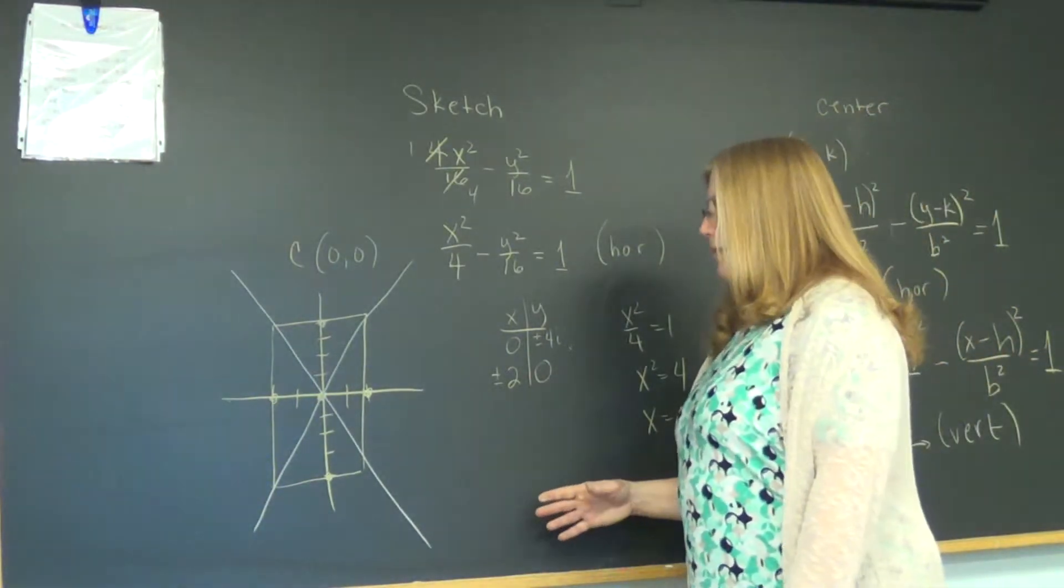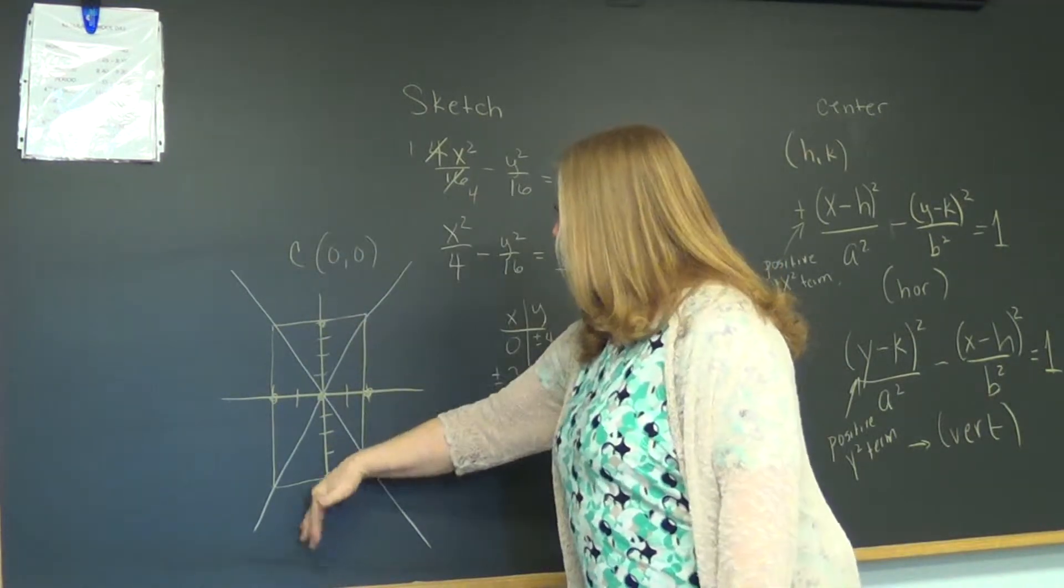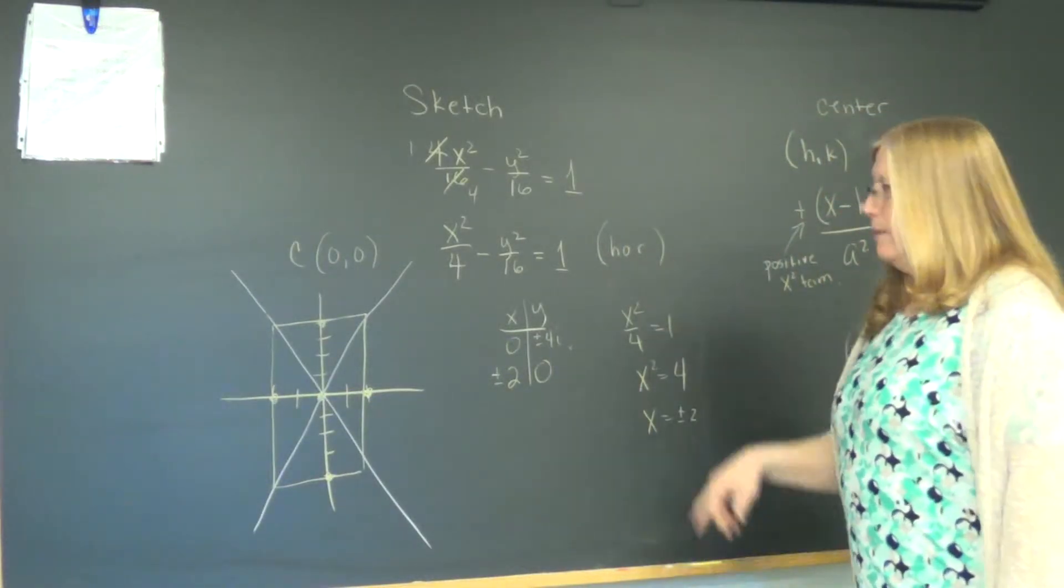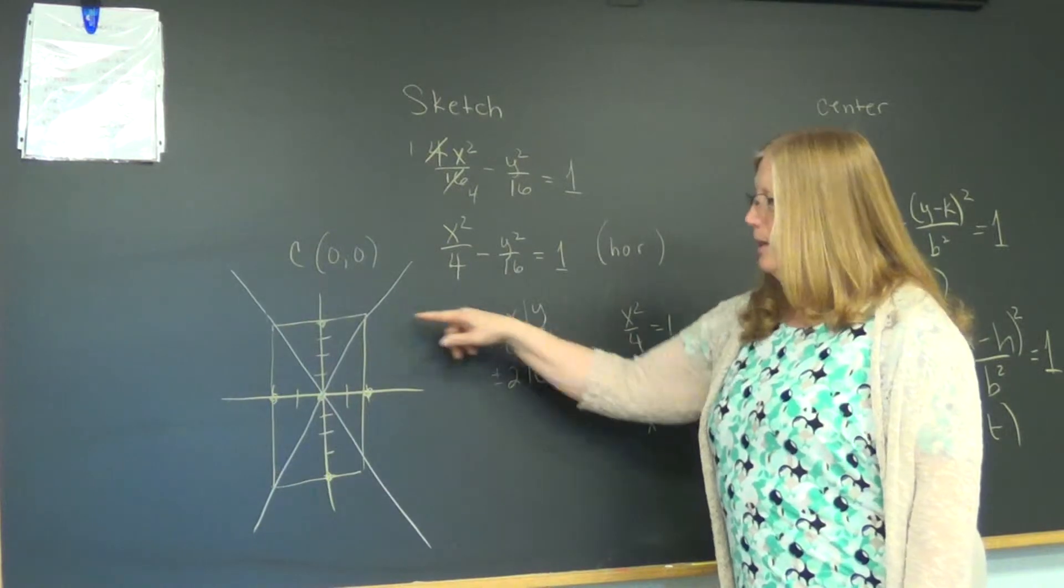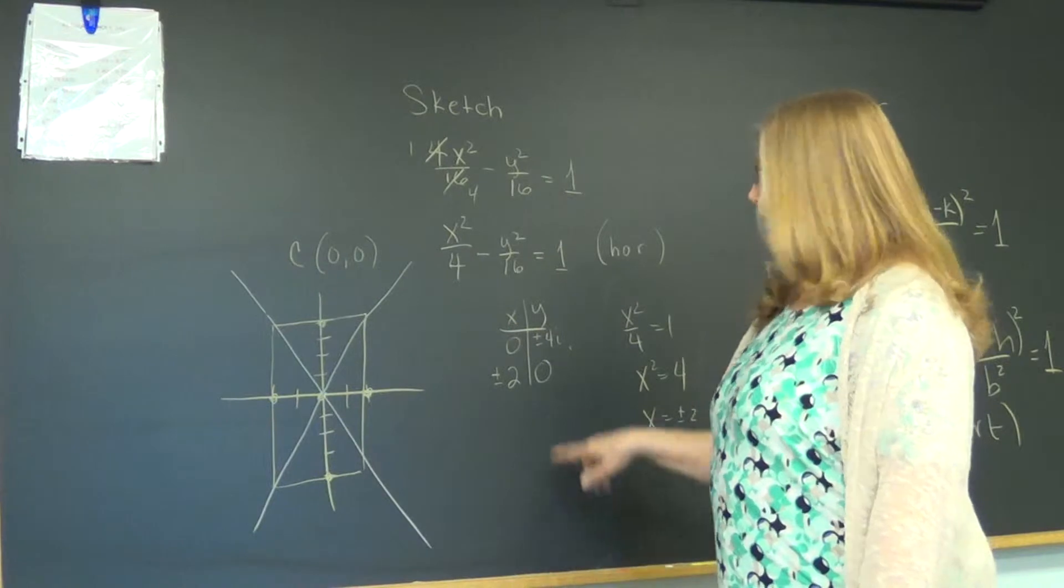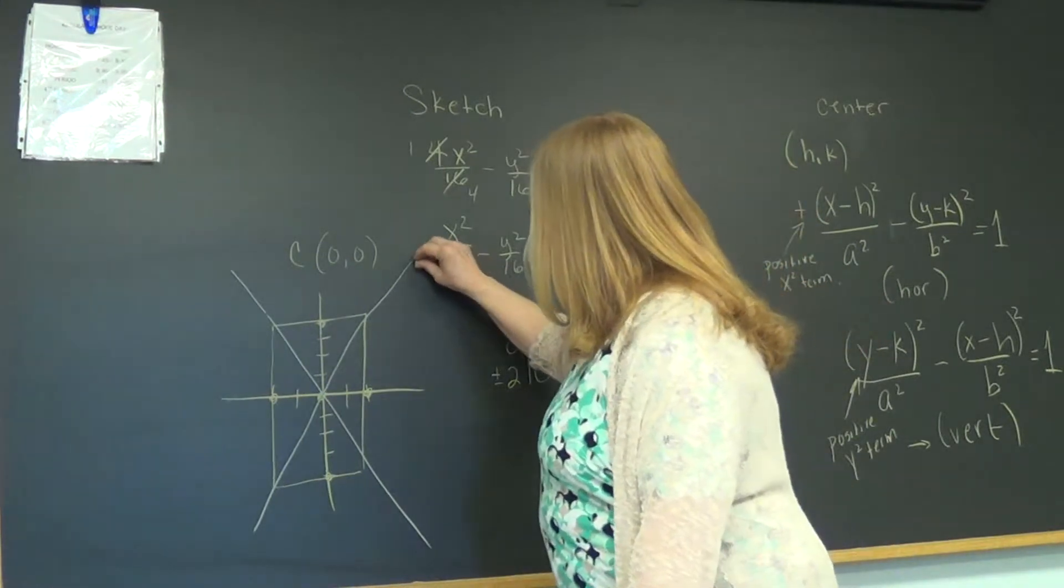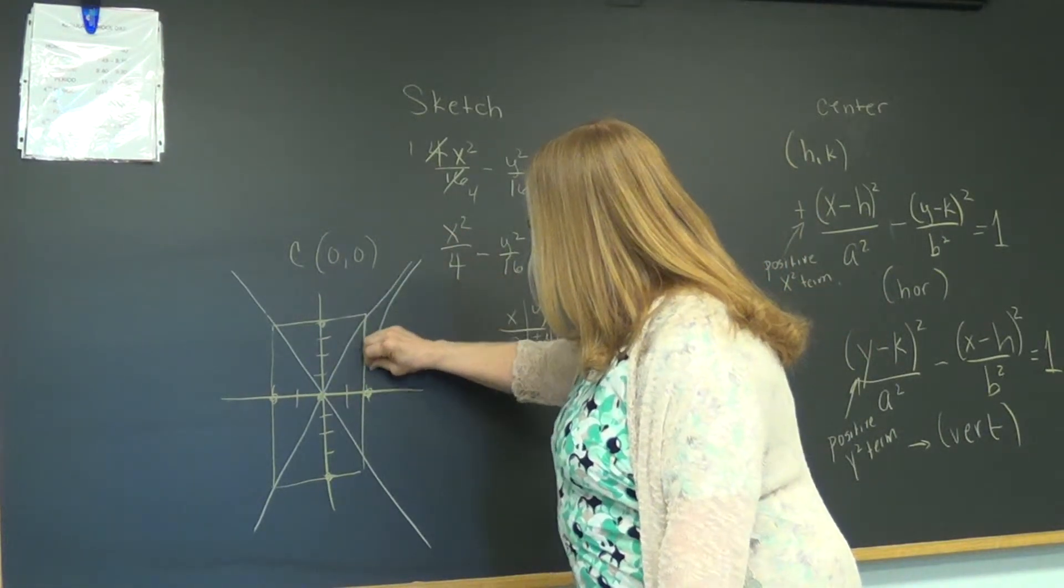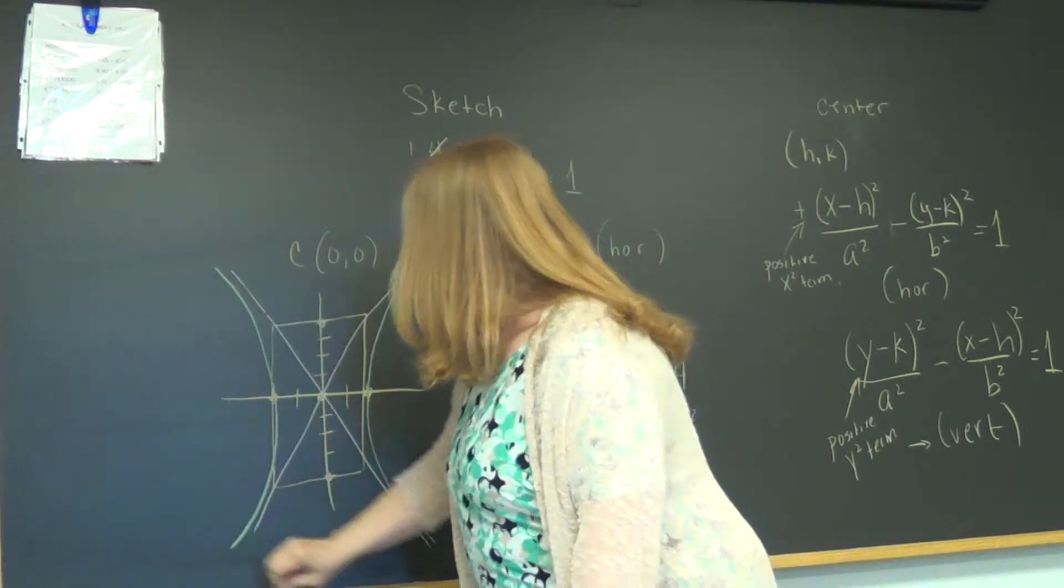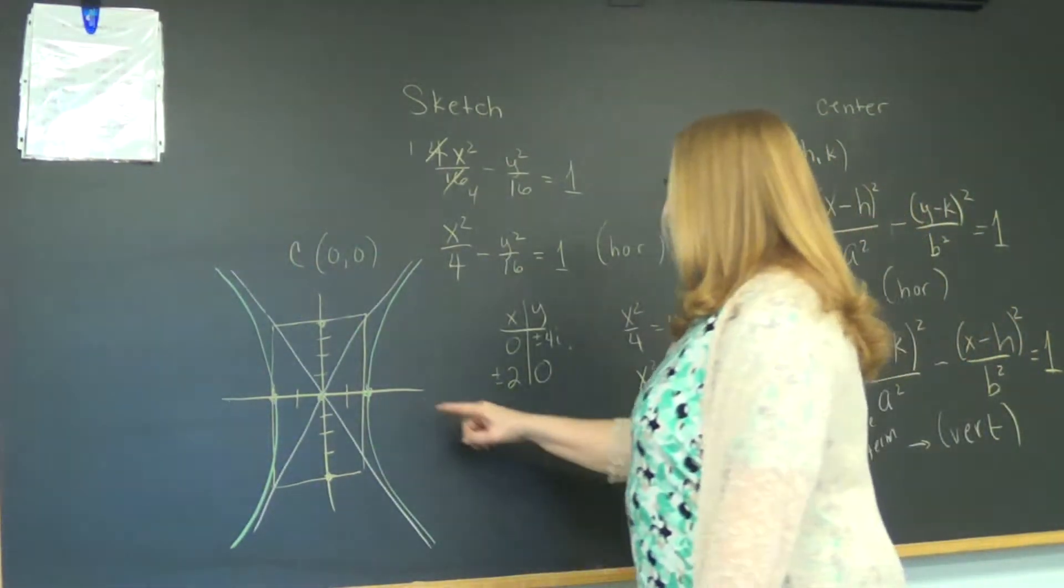Now which way does this hyperbola go? Does it go here, bounded from the top and the bottom, or is it going to go side to side? We already determined that because it's horizontal. But if you forgot, you know these points, the imaginary ones, helped us get the asymptotes, but they aren't really on the hyperbola. These are, in fact those are the vertices. So now I can use this as a boundary line, touch the vertices, and go like that.